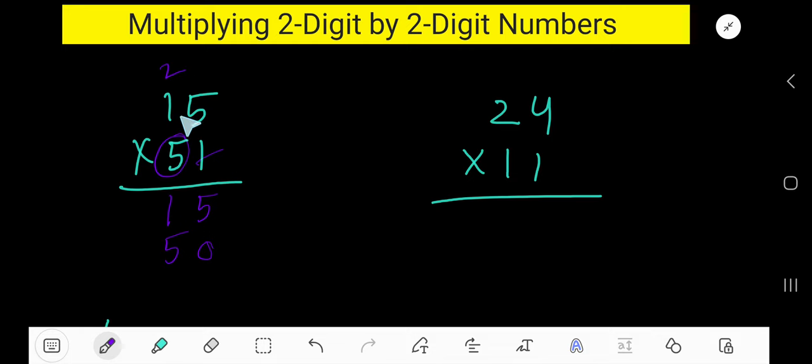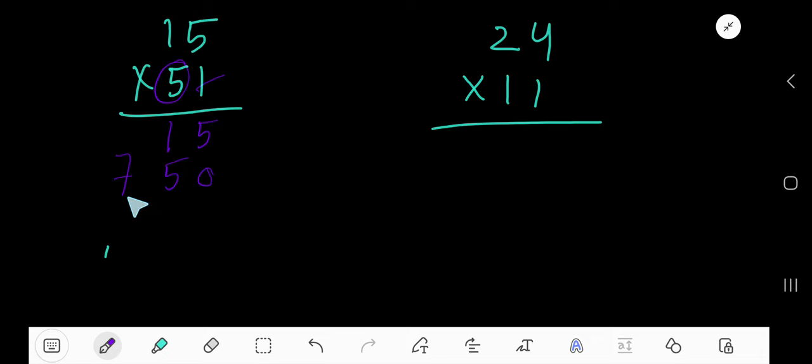5 times 1 is 5, plus 2 is 7. Now add: 5, 1 plus 5 is 6, then 7. 765.